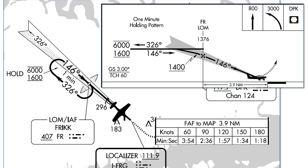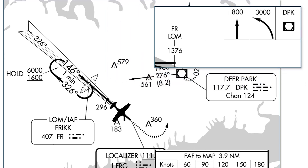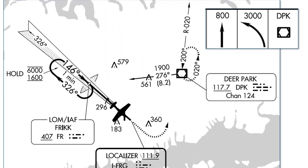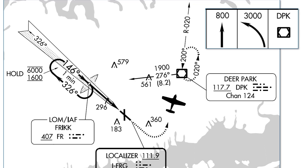So what's the missed approach procedure? We saw it written in text form, but it's also shown in sequential graphical form in the profile view. We first climb straight ahead to 800 feet, and then continue the turn in a climb to 3,000 feet, going direct to the Deer Park VOR where we'll hold. We can either do a parallel or teardrop entry at the VOR, depending on our preference and what our initial heading is.